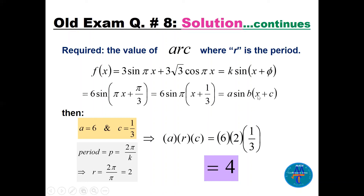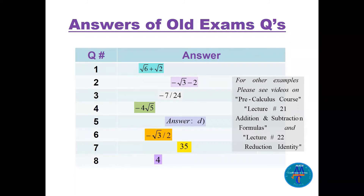The period r = 2π / (coefficient of x) = 2π/π = 2. So a = 6, r = 2, c = 1/3. Therefore a · r · c = 6 · 2 · (1/3) = 12/3 = 4. That is the final answer for question eight.